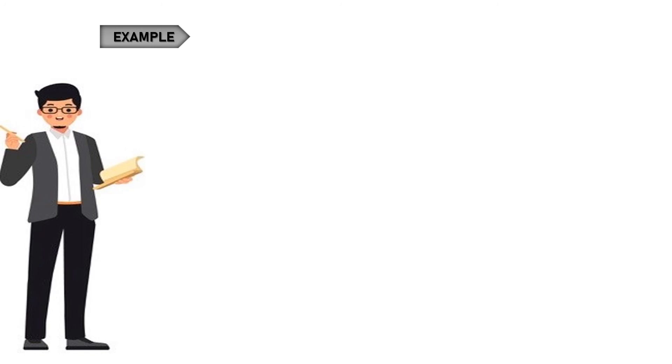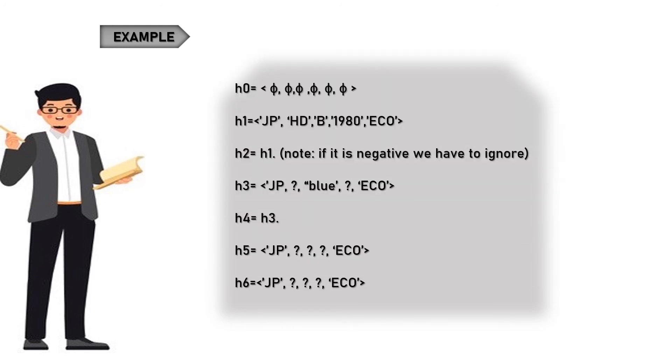Here is an example. Next let's initialize with the most specific hypothesis. H0 equals phi. H1 equals JP, HD, B, 1980, ECO. H2 equals H1. Note: if it is negative we have to ignore. H3 equals JP, Blue, ECO. H4 equals H3. H5 equals JP, ECO. H6 equals JP, ECO. This may not be the sole hypothesis that fits the datasets.